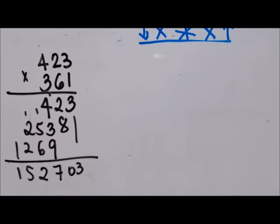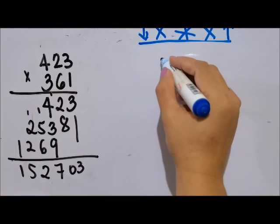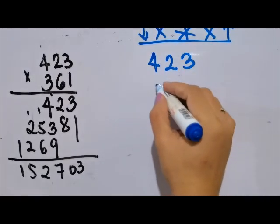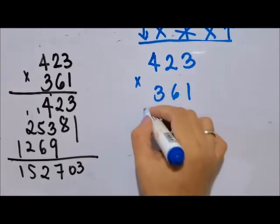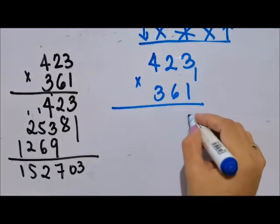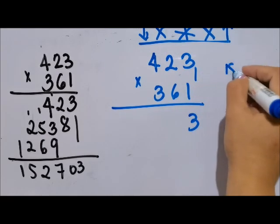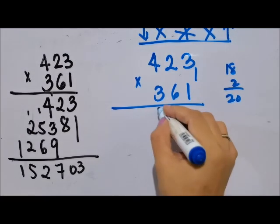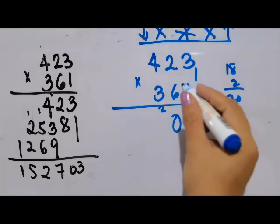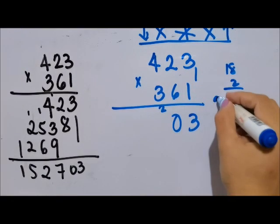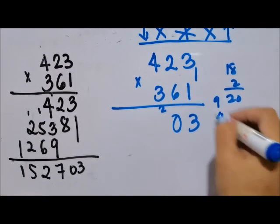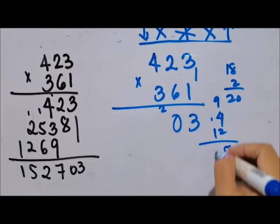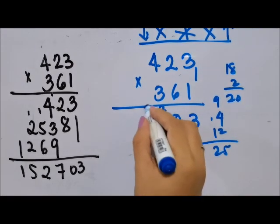Now let's do the triple cross method. 423 times 361. First number: 3 times 1 is 3. Next: 3 times 6 is 18, 2 times 1 is 2, so this is 20. So 0, carry 2 for the next number. Next is the triple cross: 3 times 3 is 9, 2 times 1 is 2, 2 times 6 is 12, so this will be 15, carry 1, 25. So 5, carry 2.